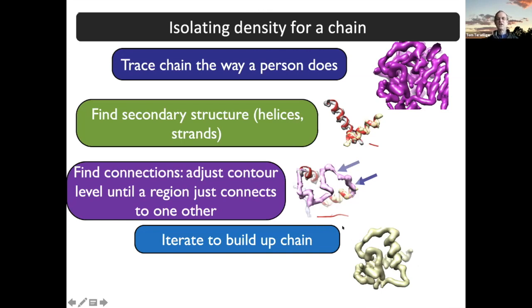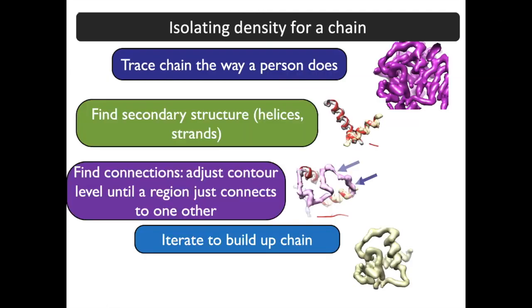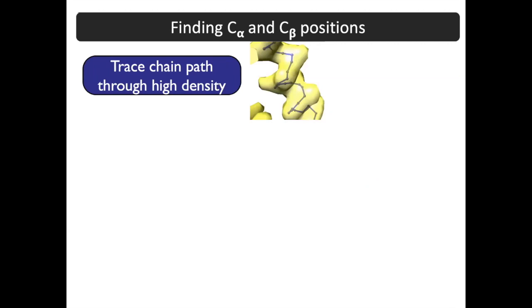This works better than you might imagine — very well. Then you iterate the whole procedure. By adjusting the contour levels again and again, you can build up the whole chain. Then there's a question: how do you provide a symmetry file? What is that symmetry file?